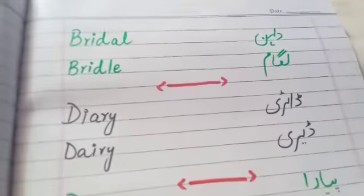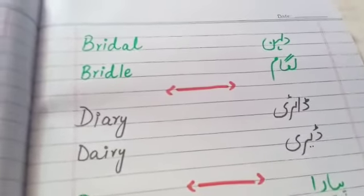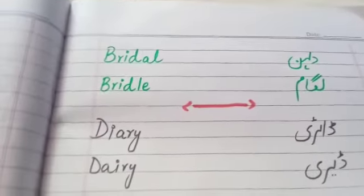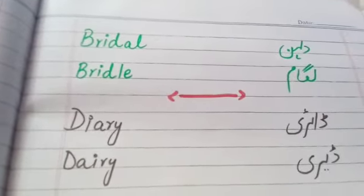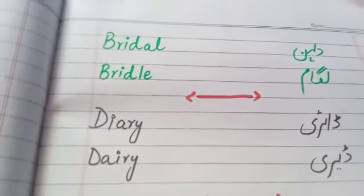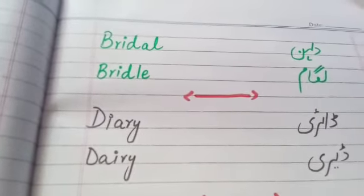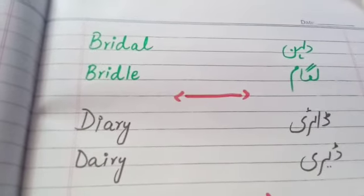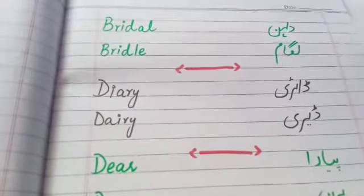The next one is vocation again, and its meaning is 'chutti' (vacation). Next one is bridal — you can see the spelling over here: B-R-I-D-A-L — and its meaning is 'dulhan' (bride-related). The next one is bridle, spelled B-R-I-D-L-E, and its meaning is 'lagam' (reins).